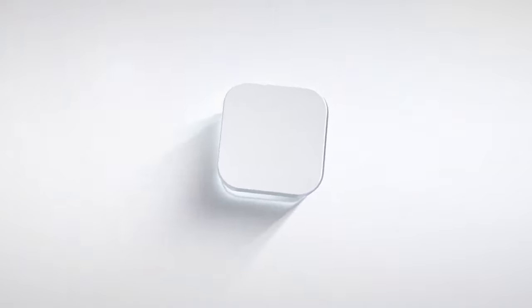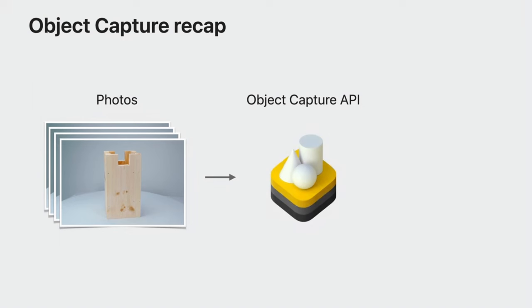Hey guys, Jack here. I'm here to tell you that Kiri Engine version 2.10 is now available to be updated on your App Store and Google Play Store. There are so many great features in the new version 2.10, but one of the most highlighted is definitely going to be the real-time photogrammetry running locally on your iPhone Pro models. It is powered by the updated Object Capture API framework in iOS 17.